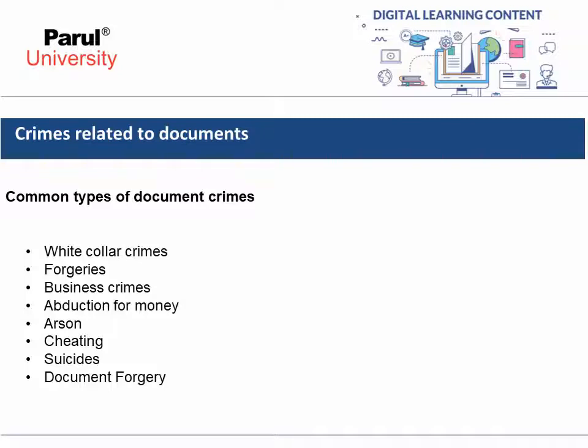Other types of forgery include counterfeiting of currency and coin, production of false documents, and forgery as a covert operation. The next is business crime — any crime which is directly or indirectly related to any type of business. Then abduction for money, which is also a serious crime where documents can be found as major evidence.